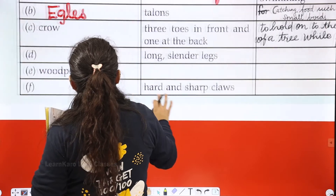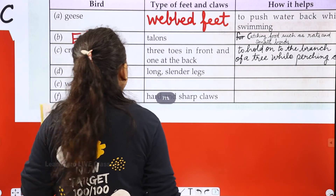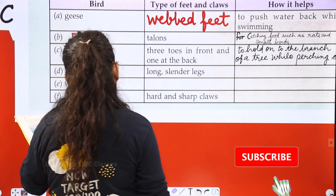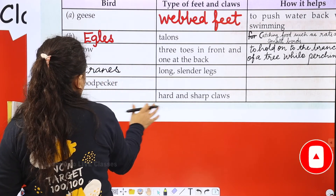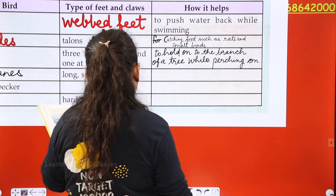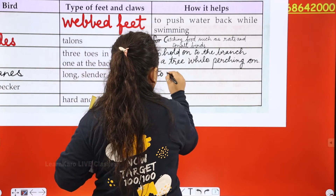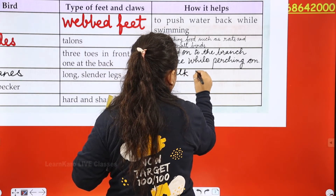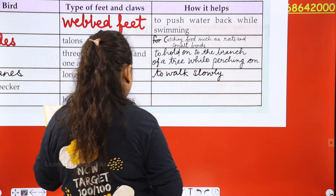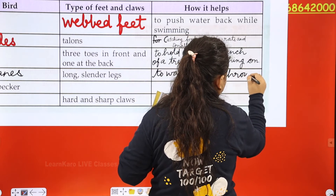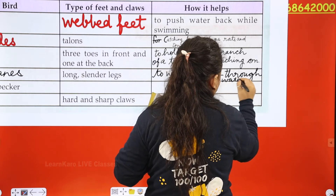Next: which bird has long and slender legs? Cranes have long and slender legs, and this helps them to walk slowly through water and mud.